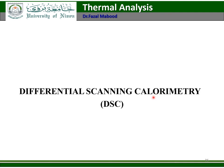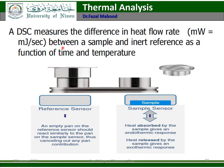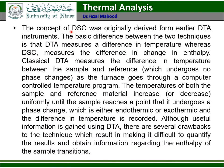Differential Scanning Calorimetry (DSC) measures the difference in heat flow rate between a sample and an inert reference as a function of time and temperature. There will be one sample and one reference. In DSC, what we are measuring between the reference and the sample is the difference in enthalpy or the difference in heat flow rate. The concept of DSC was originally derived from DTA instruments. The basic difference between the two techniques is that DTA measures the difference in temperature, whereas DSC measures the difference in enthalpy.